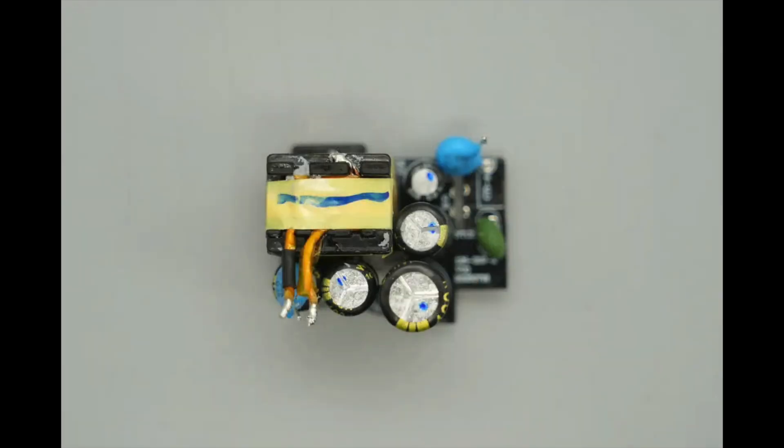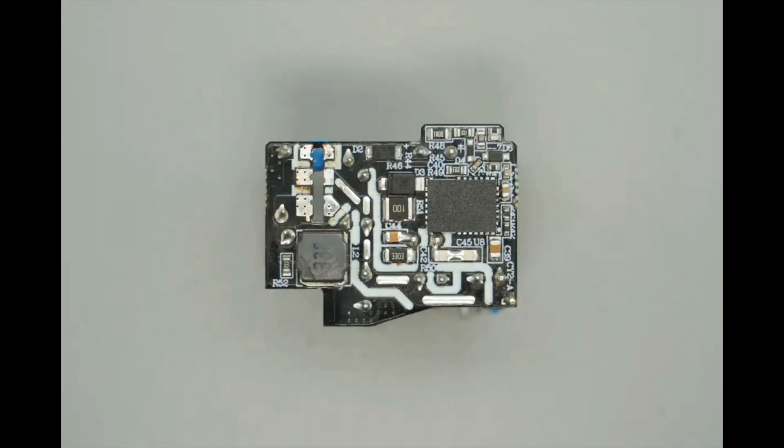The front side of the second PCB houses an NTC thermistor, high-voltage electrolytic capacitors, a capacitor supplying power to the master control chip, a transformer, and Y capacitors.